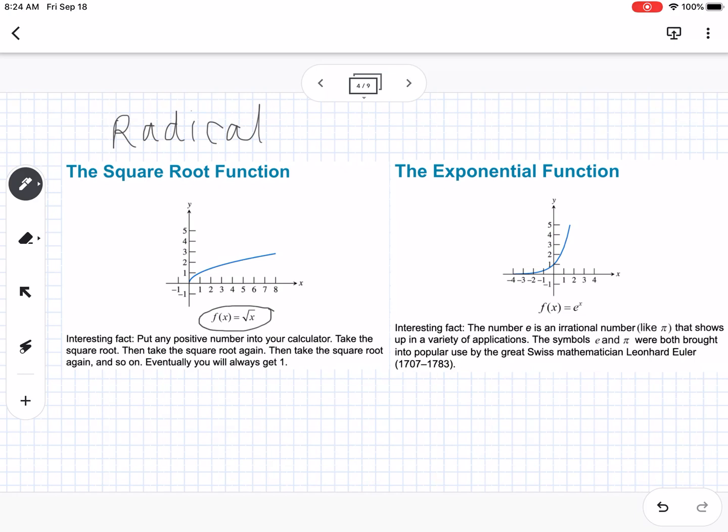Next is the exponential function, f(x) = e^x. The number e is an irrational number, like π, that shows up in a variety of applications. The symbols e and π were brought into popular use by the great Swiss mathematician Euler.